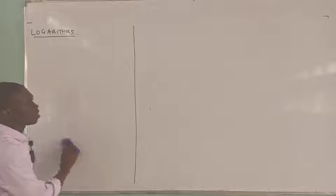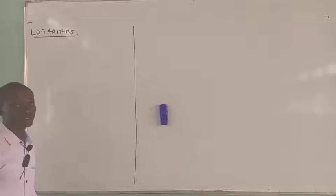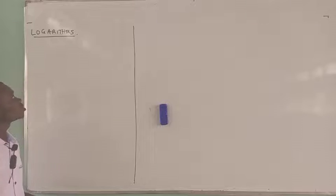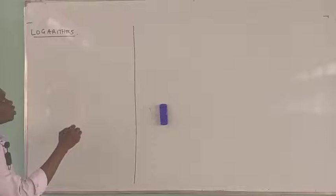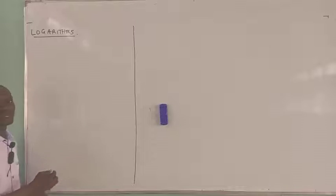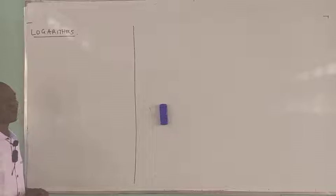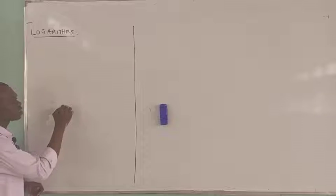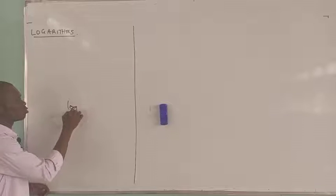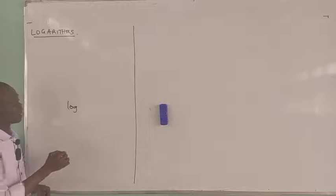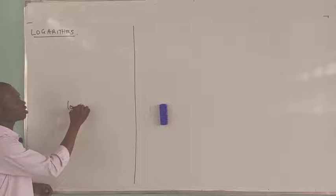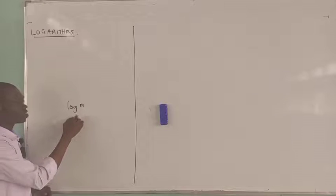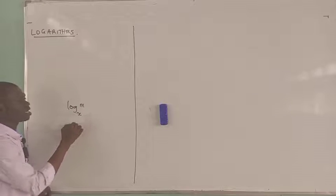So, logarithms — that is what we want to discuss. So what is a logarithm? By definition, the logarithm of a number is always given to a base. So you only have the logarithm of a number, say logarithm of M, and it will always have a base, say X.